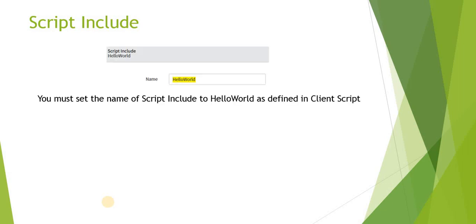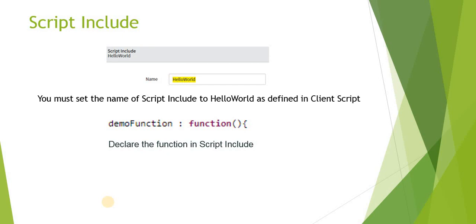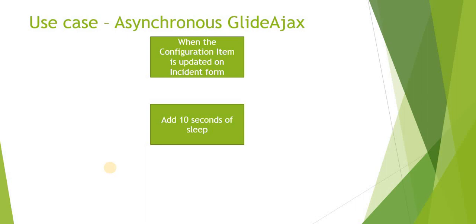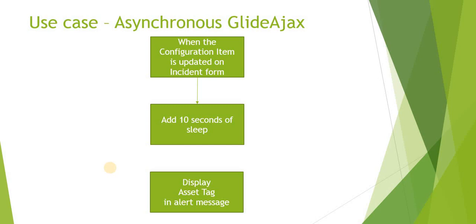In the script include, first give the function name which should be the same as passed in the Glide Ajax parameter — same as sysparam_name. That is 'demoFunction', defined as demoFunction: function(). To retrieve the parameters you passed, use this.getParameter with sysparam_user_name or whatever name you defined. Store that parameter in a variable and use it in your script include. In the demo we will pass the configuration item name from the incident form to the server-side script and display the asset tag in an alert.